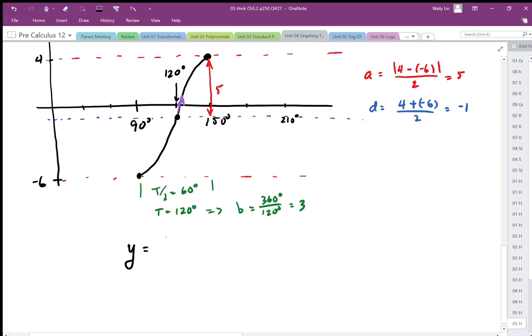So our equation is going to look like this. Our amplitude. Horizontal compression is 3. Our horizontal shift is 120 degrees to the right. Our vertical shift is negative 1 down. And x is in degrees.